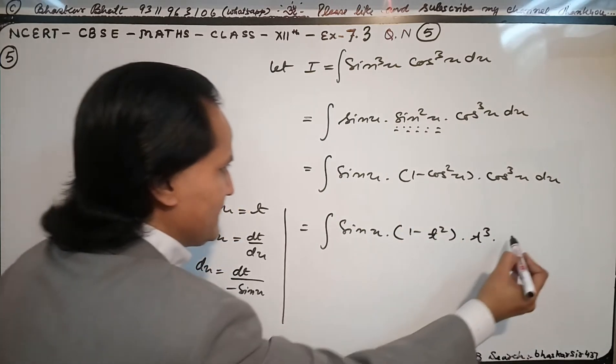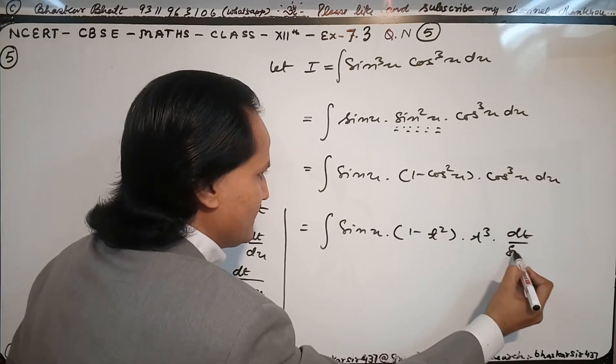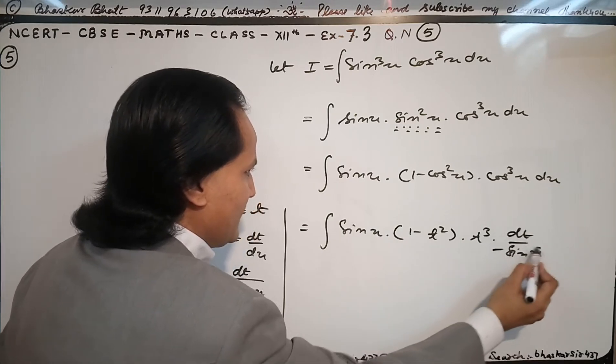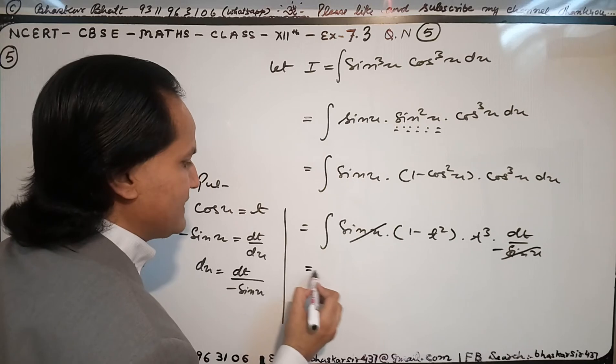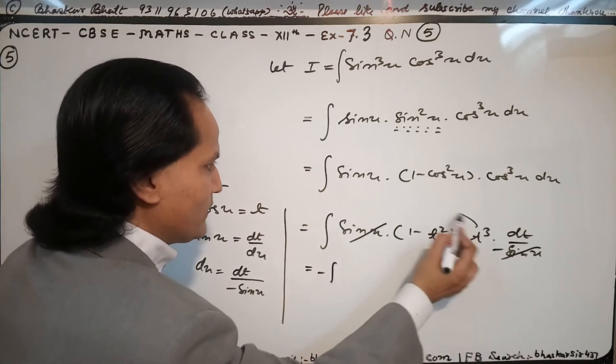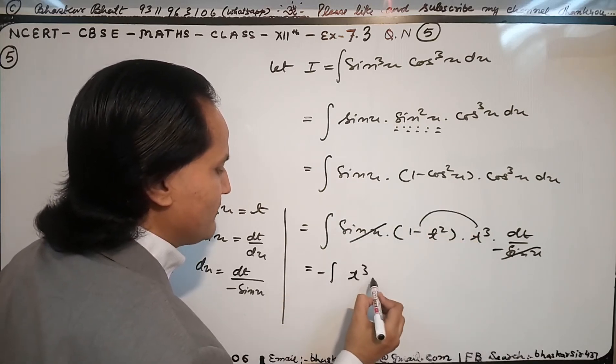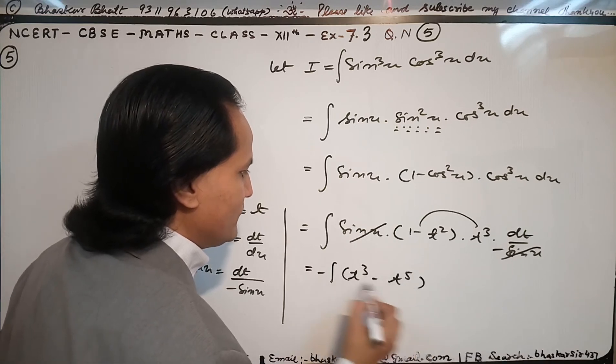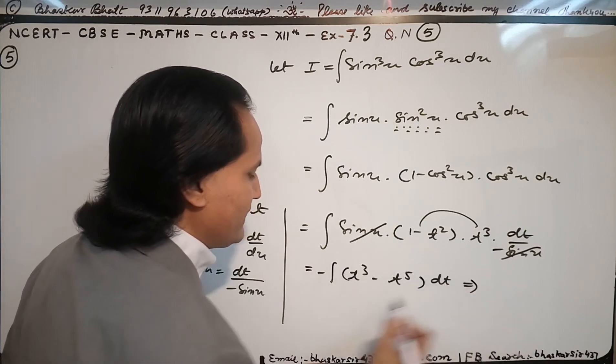Cancel sine x. I will take minus outside the integral. I have now t cube minus t to the power 5 with respect to t. You know very well what is the integral of t cube.